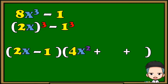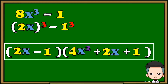Square the base of the first term — the square of 2x is 4x². Then multiply the base of the first term and the base of the second term, which is 2x. Lastly, square the base of the second term — 1 squared is still 1. So the factored form of 8x³ − 1 is (2x − 1)(4x² + 2x + 1).